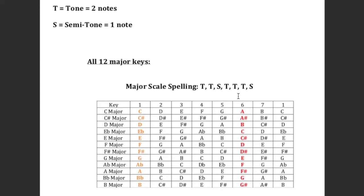And then you have the final S, one note up from B, which takes you back to C where you started. So the major scale spelling is: T T S T T T S - tone, tone, semitone, tone, tone, tone, semitone. That is the major scale spelling and it gives you all seven notes of C major: C, D, E, F, G, A, B.